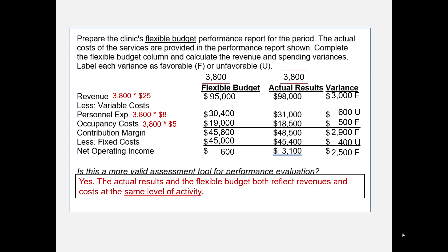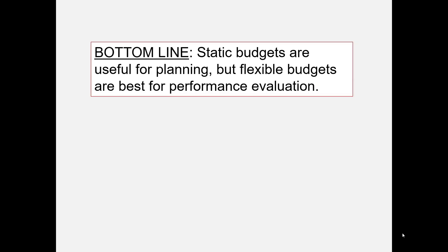So when performance reports are prepared, they should compare actual results to the flexible budget, not the static budget. The bottom line: static budgets are prepared because they're useful for planning, but flexible budgets are prepared at the end of the period because they are best for performance evaluation.